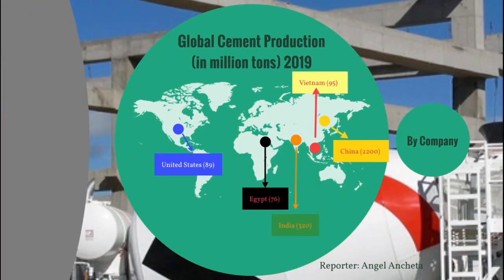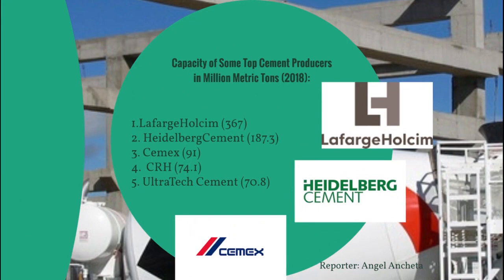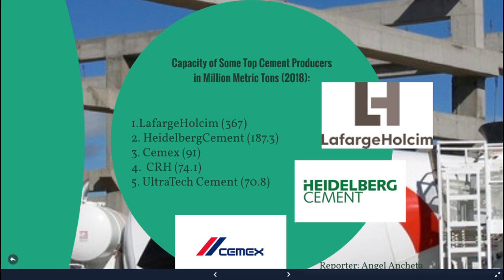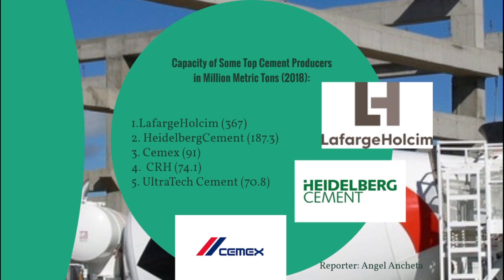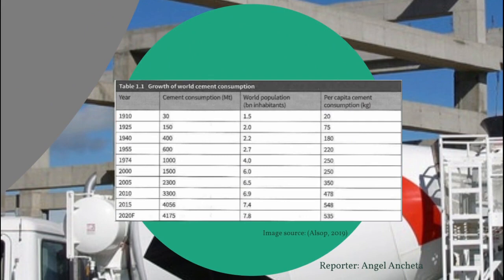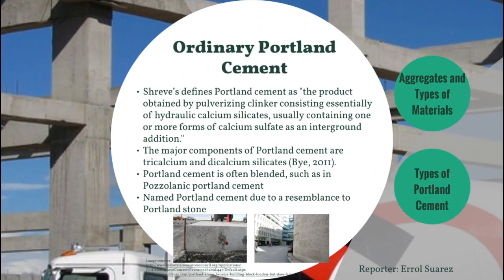The top cement producers in 2019 are China with 2,200 million metric tons, followed by India with 320, Vietnam with 95, the United States with 89, and Egypt with 76. By company, top producers in million metric tons include LafargeHolcim at 367, Heidelberg Cement at 187.3, Cemex at 91, CRH at 74.1, and Ultratech Cement at 70.8. The current trend is upwards due to increasing demand for cement in public works and housing, with an expected consumption of 4,175 million metric tons by 2020. This report focuses on dry-process ordinary Portland cement.